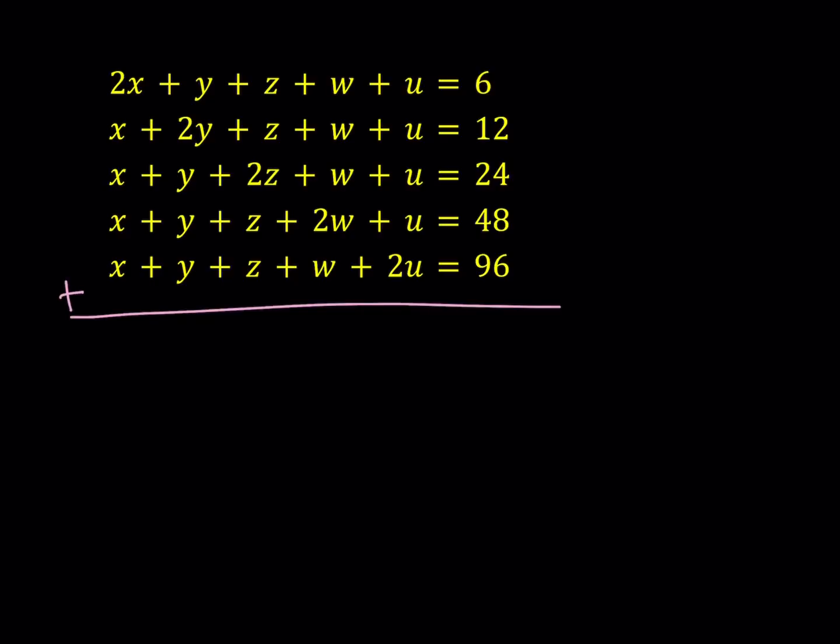Because what happens is every equation has one of the variables two times and everything else is one time. So that's kind of symmetrical, sort of nice. When we add these all up, we're going to be getting six X, plus six Y, plus six Z, plus six W,